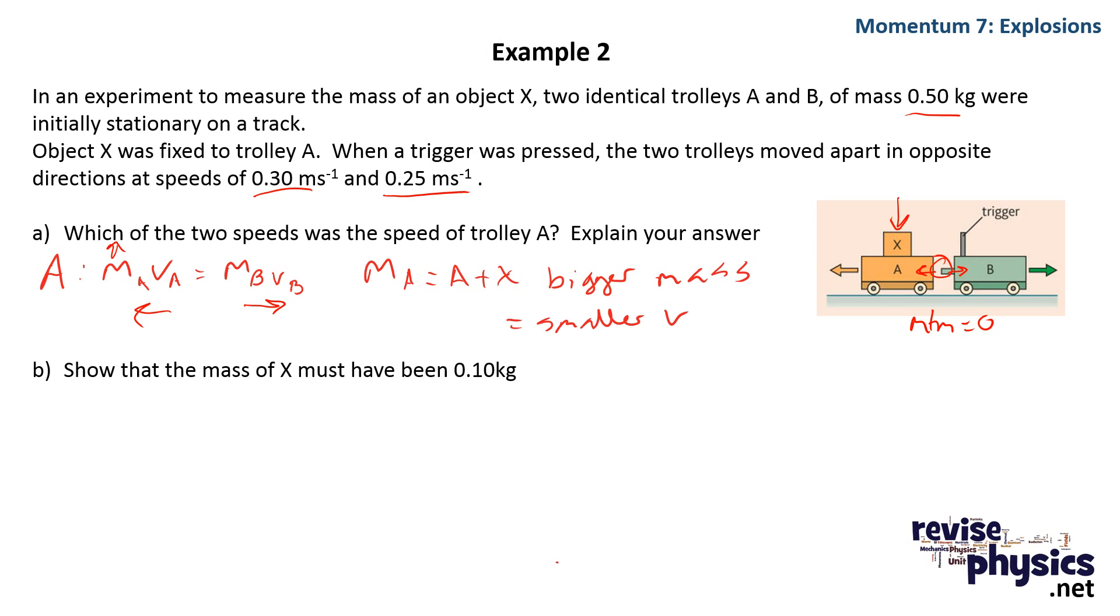is going to have to have a smaller velocity, because that m is bigger, so that v must be smaller, in order to equal the momentum of trolley B.